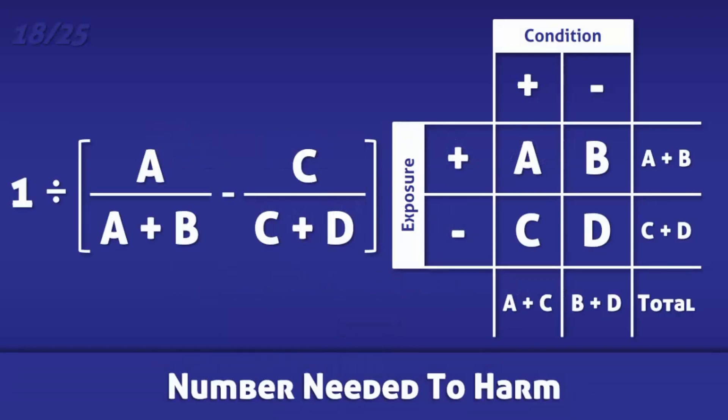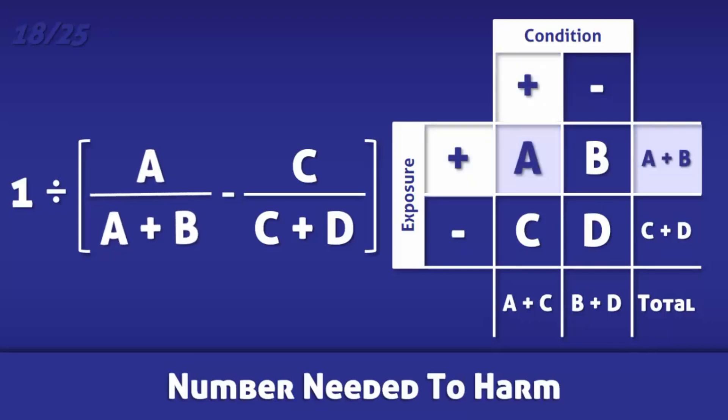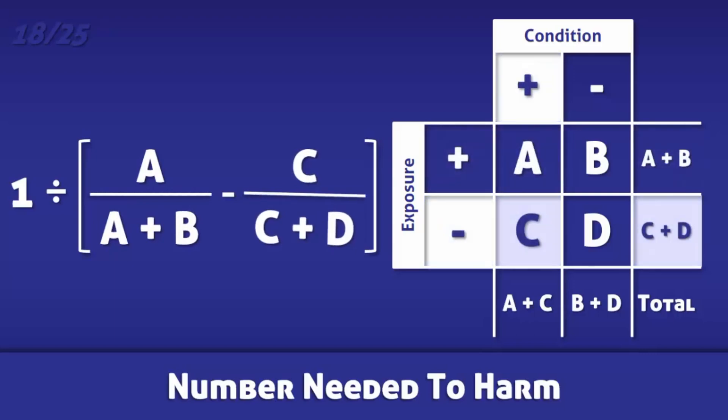The number needed to harm is the number of people that need to be exposed to a risk factor in order for there to be an increased morbidity in a single patient. Since it is the inverse of the attributable risk, it is calculated by dividing 1 by the difference in incidence of the condition in individuals who are exposed to a risk factor by the incidence of the condition in those who are not.